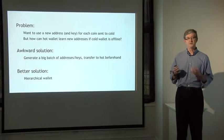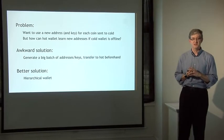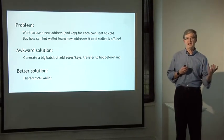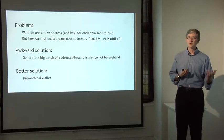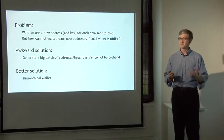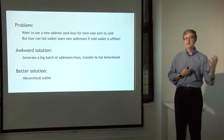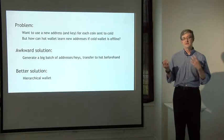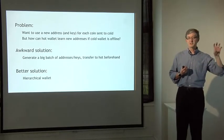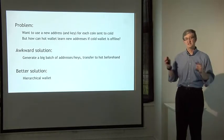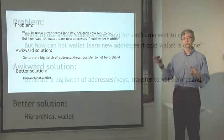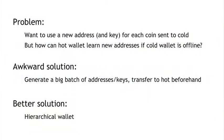We have a problem: how do we manage these addresses? For privacy reasons, we want to receive each coin at a separate address and manage different secret keys for each address. Whenever we transfer a coin from the hot side to the cold side, we'd like to use a fresh cold address. But because the cold side is not online, we need some way for the hot side to find out about those addresses.